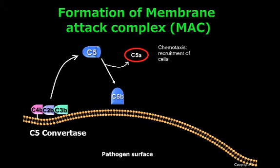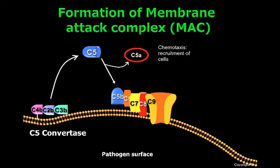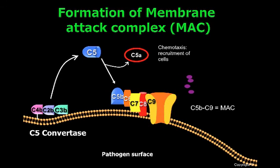C5a is an important chemoattractant and pro-inflammatory molecule that is reviewed in another video. C5b will be recognized by C6 and C7, forming a C5b-6-7 complex, which binds to the membrane via C7. Then C8 binds to the complex and inserts into the cell membrane. Later, many molecules of C9 bind to the complex and polymerize to form a pore. This complex, C5b-C9, is also called the membrane attack complex, or MAC. MAC is inserted into the lipid membrane of pathogens causing lysis, and in certain circumstances MAC can also lyse host cells, causing damage to the host.